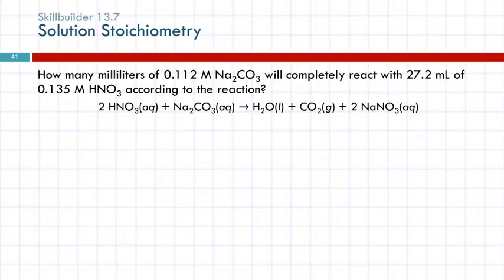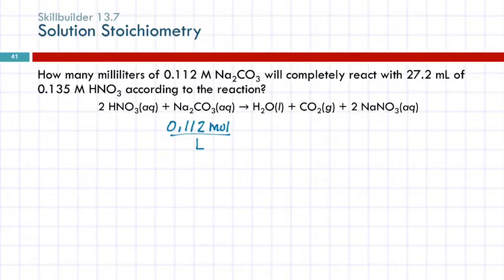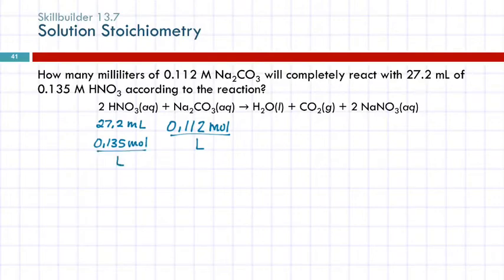0.112 molar sodium carbonate — I'll write that as 0.112 moles per liter, because that's what capital M means, which helps to see it's a conversion factor. The next number: 27.2 milliliters of nitric acid, and it also gives me a molarity of 0.135 moles per liter of nitric acid.